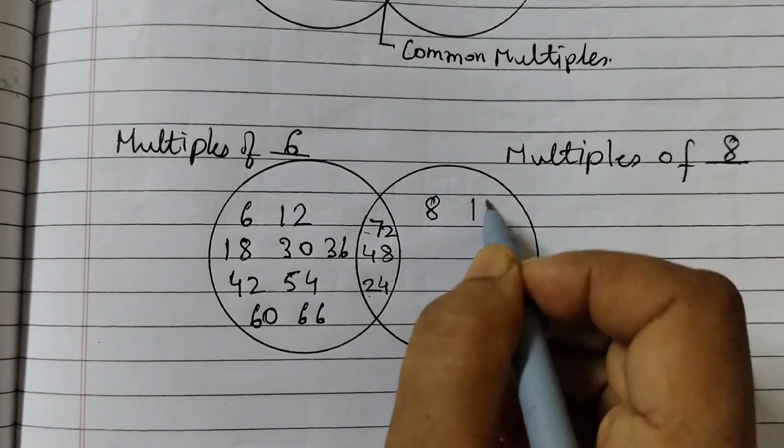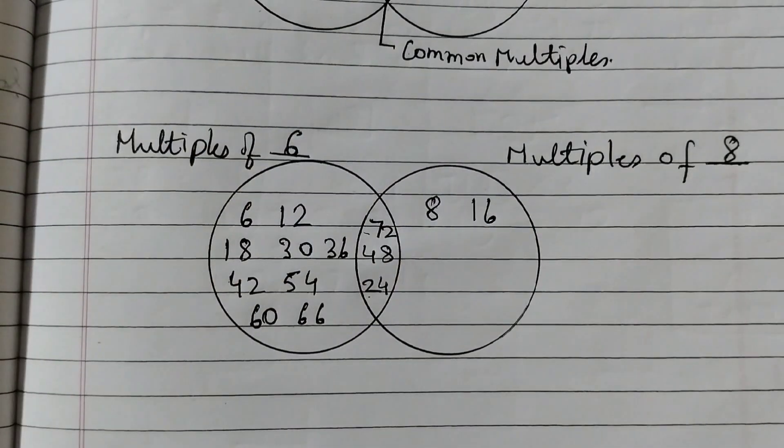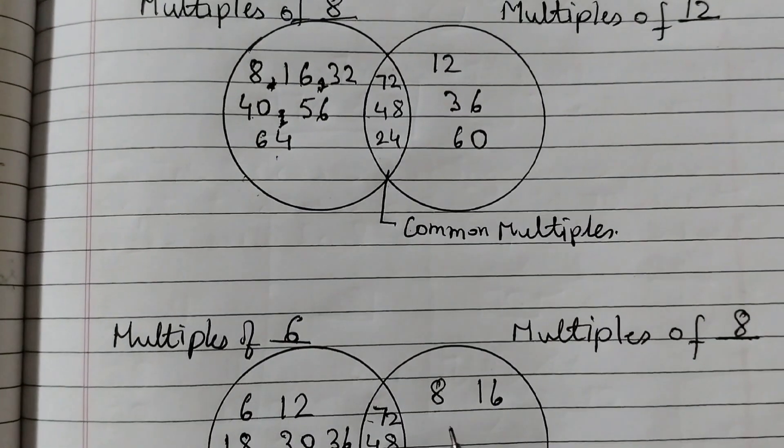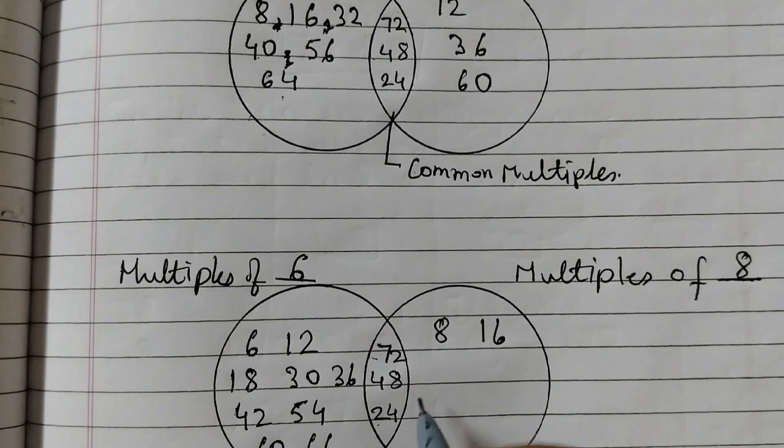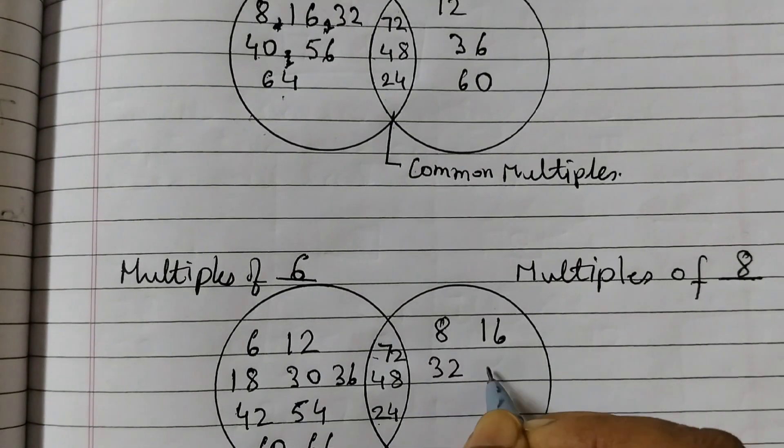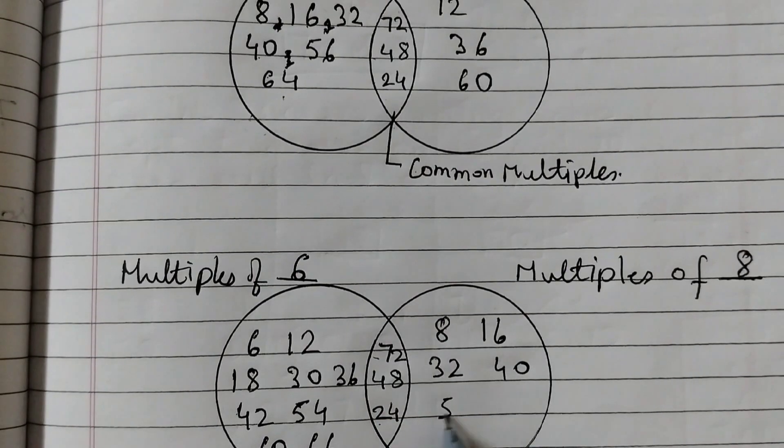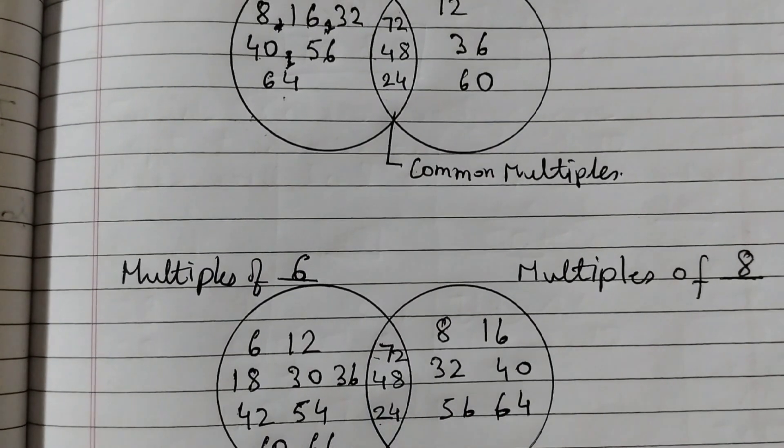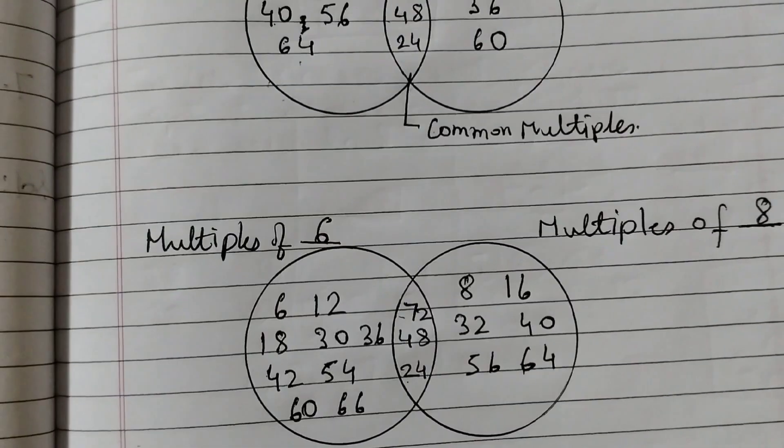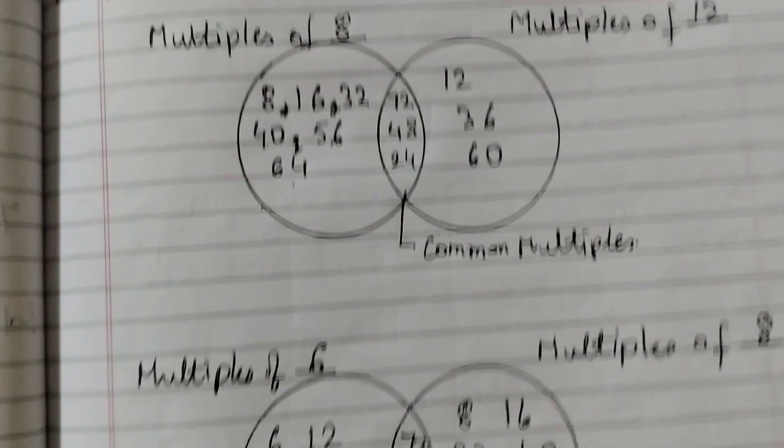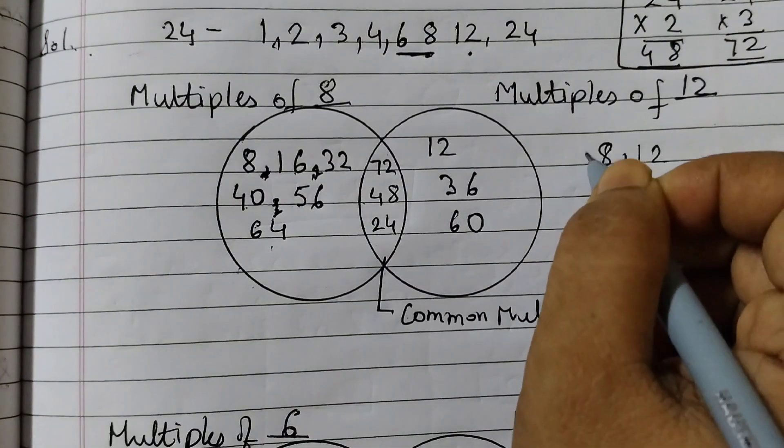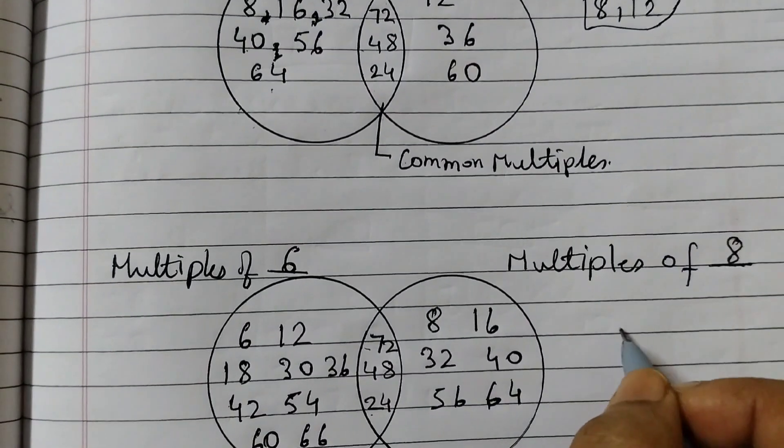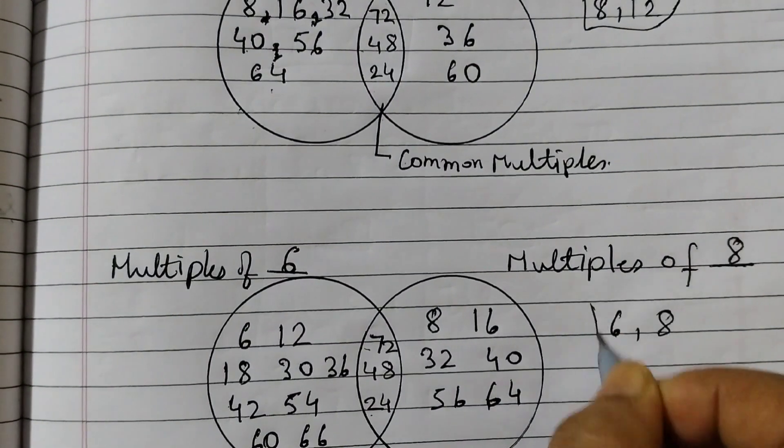Multiples of 8: 8, 16, you can just copy it from the previous one. 8, 16, 8 threes are 24 given, 8 fours are 32, 40, 48 given here, 56, 64, 72. This is using the numbers 6 and 8, you can fill it up like this. Using the numbers 8 and 12, here I have taken 8 and 12, the two numbers, and here I have taken 6 and 8, these two numbers.